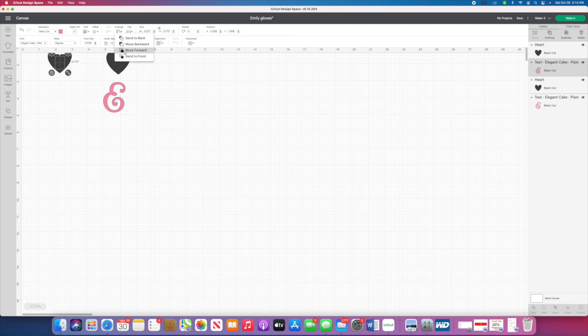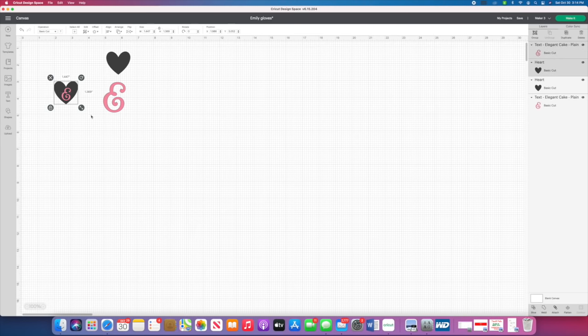You simply take your heart, size it to where you need it to be, take the E, set it on top, and select both items and get them nice and centered by going to the align button. I usually click the horizontal one and it'll get it nice in the middle, and then you could also do the vertical one as well. Once you get that done, you're going to select it again, and then at the bottom right corner you're going to hit slice, and what that does is makes the E slice through that heart. So you can pull the pink E off, pull the black E off, and I'm left with the heart with an E in it.